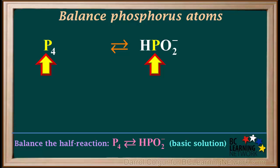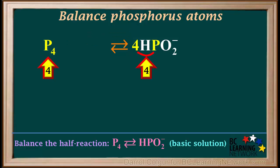The first step is to balance atoms other than hydrogen or oxygen. In this case, it is phosphorus. We have four P atoms on the left and only one P atom on the right. To balance P's, we add a 4 here, in front of the HPO2⁻. Now we have four P atoms on both sides, so phosphorus is balanced.